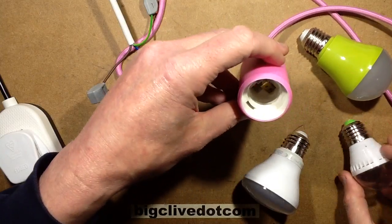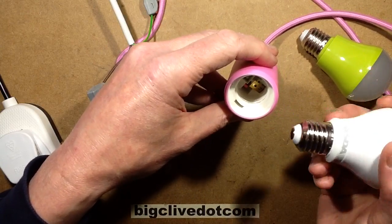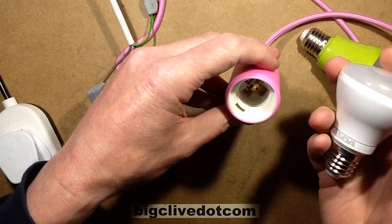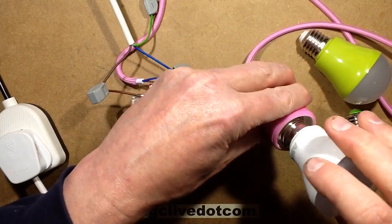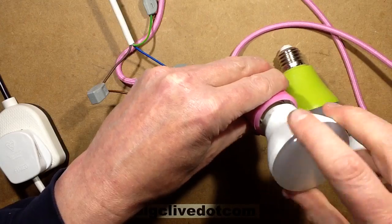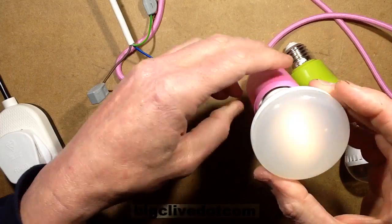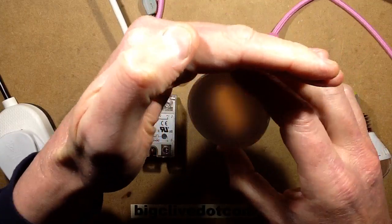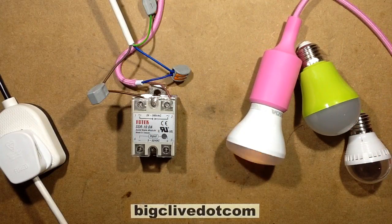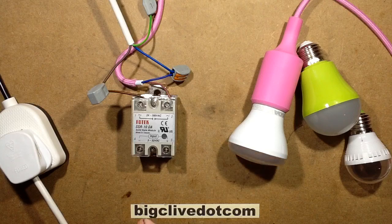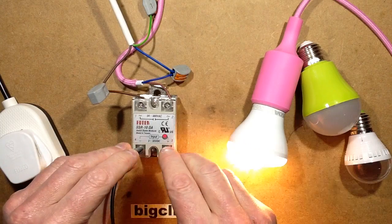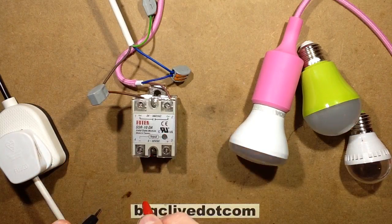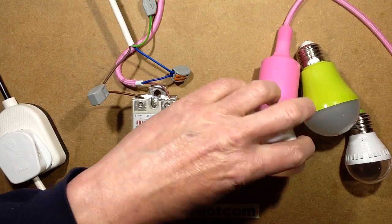But when you put in one of these more expensive, this is an Asda lamp, Asda branded anyway, and it's a quite a high power one that's got a switching power supply in it, it gets really annoying because it starts flashing on and off. It'll still work when I power it up properly by turning the solid-state relay on, but as soon as I turn it off it'll start that flashing again.